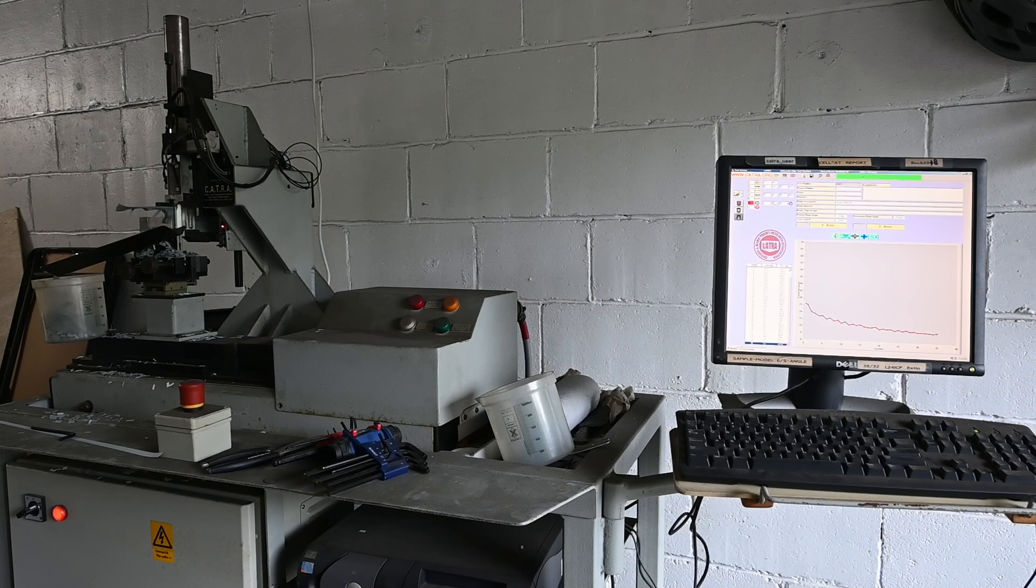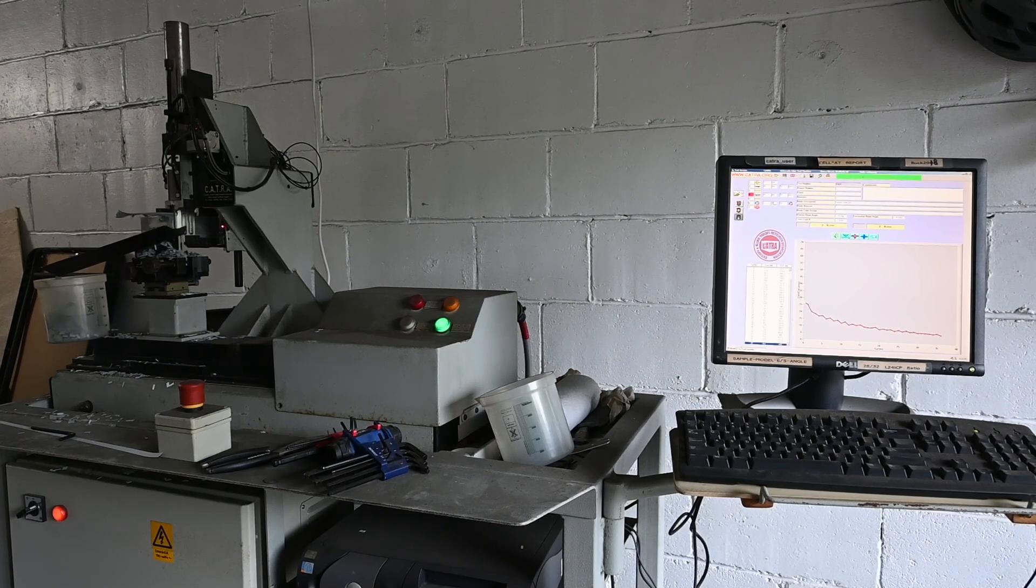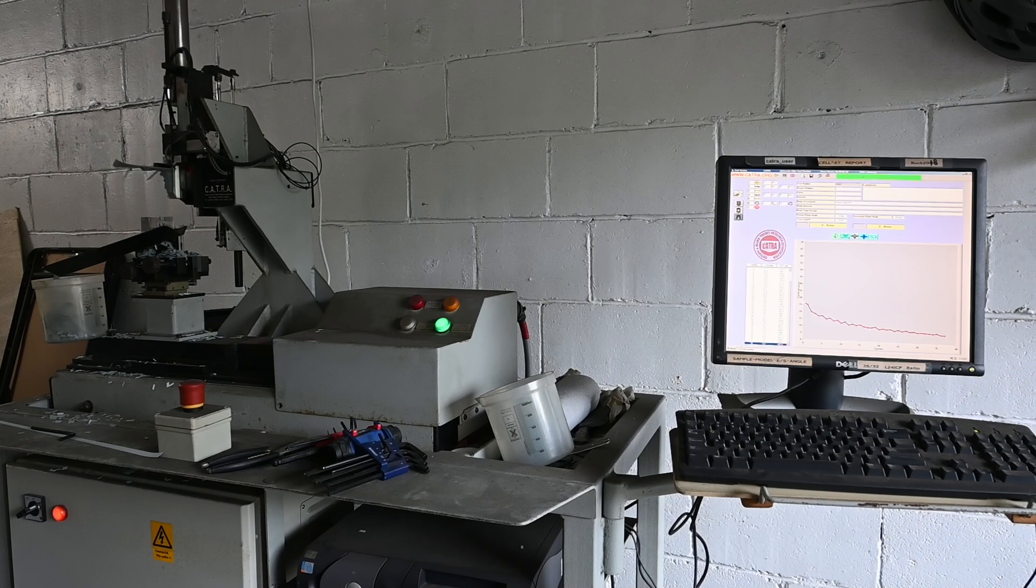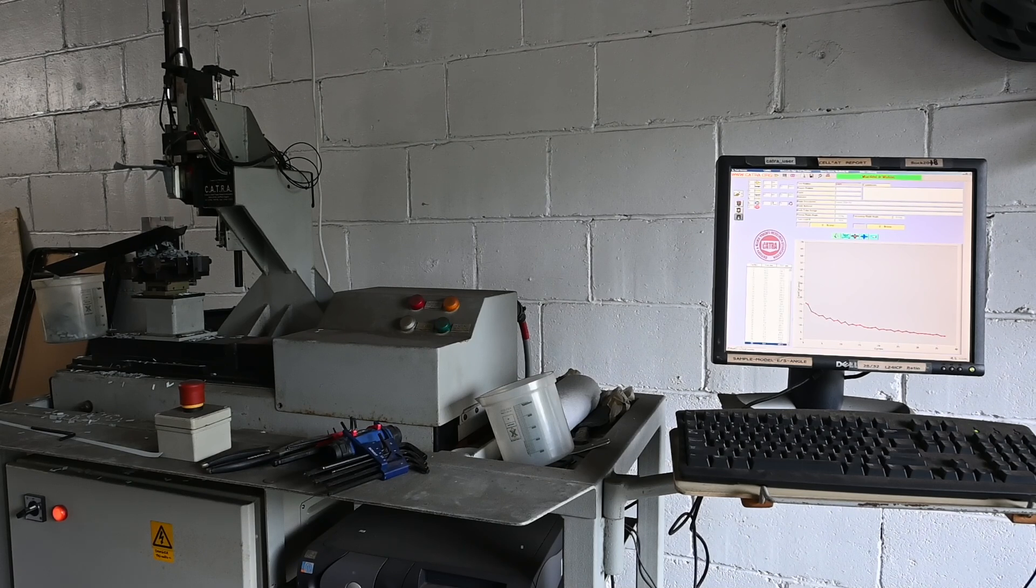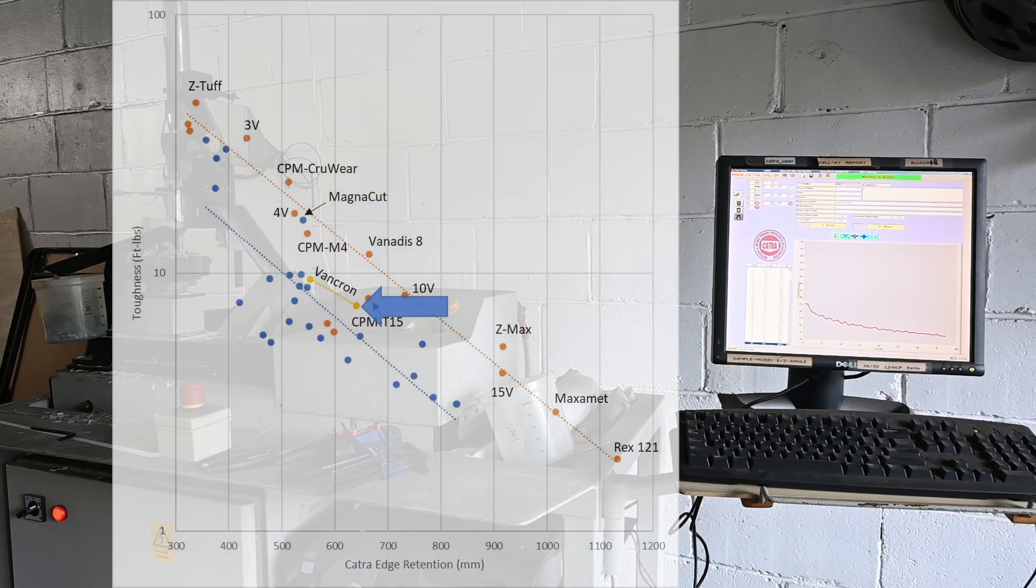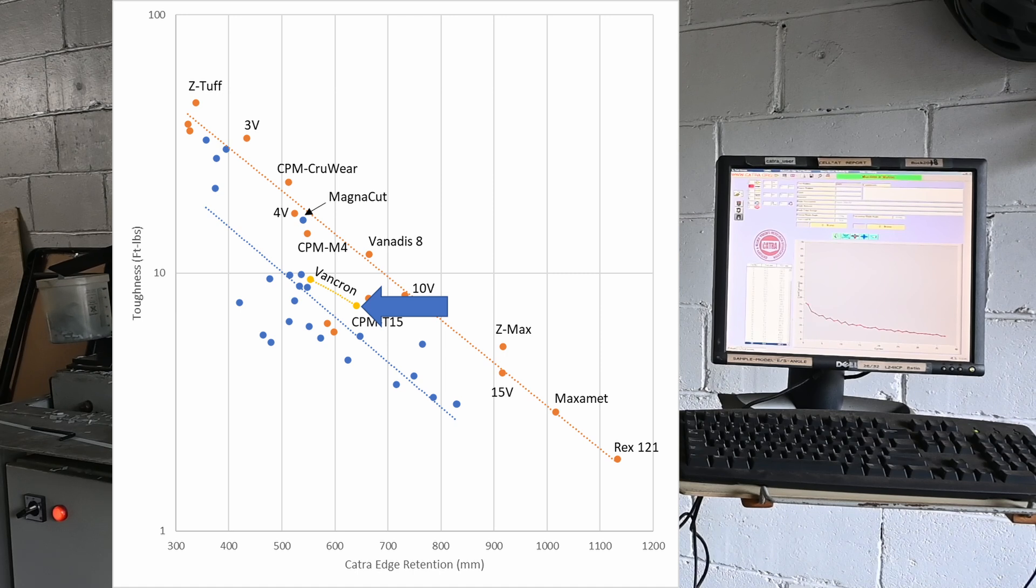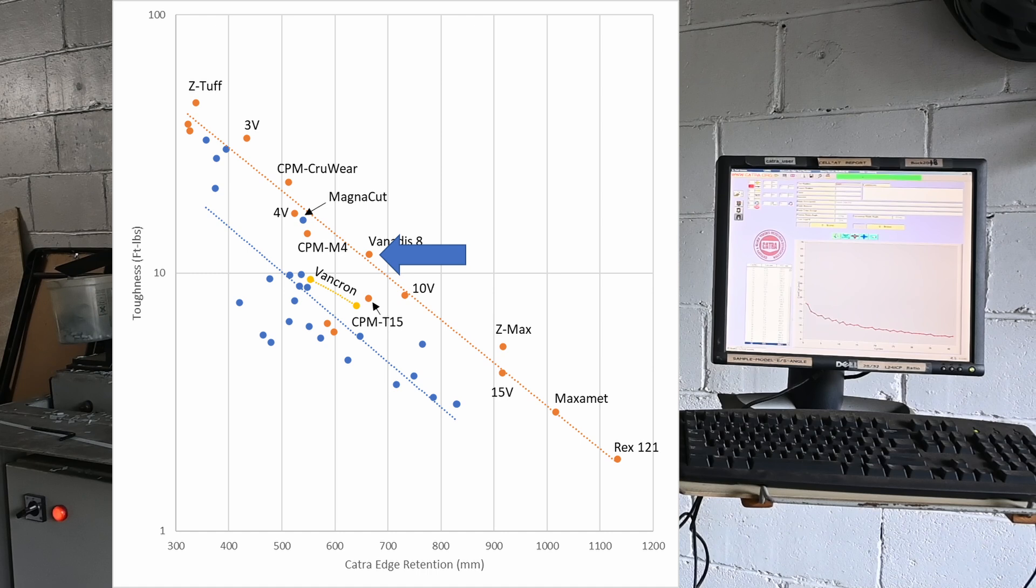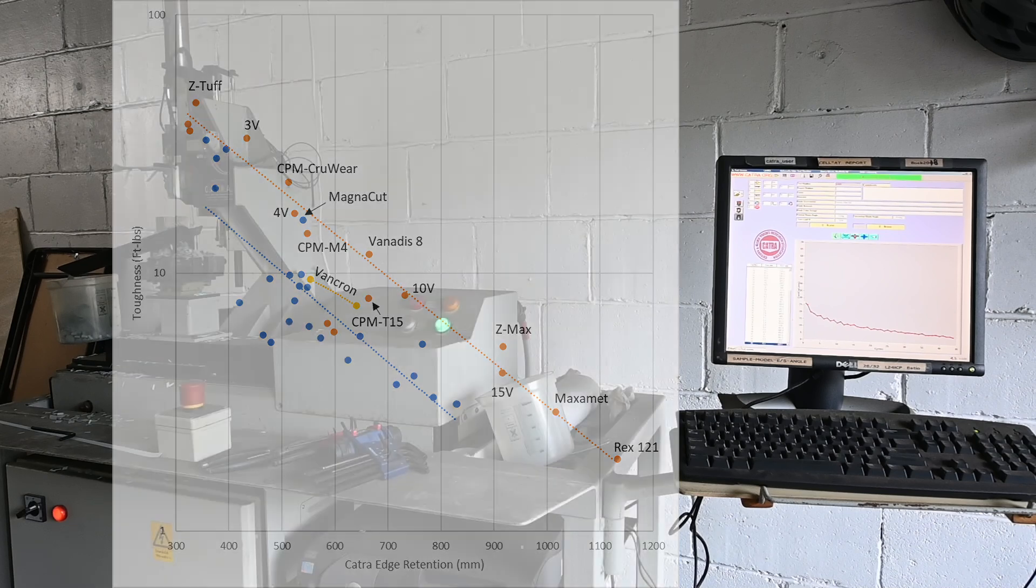So after all of that, is VANCRON a bad steel? No, I was just surprised about the results and the mechanisms at play for why it performed differently than expected. It is in a similar toughness-wear resistance balance to many high-speed steels and stainless steels. Personally, I would prefer to use a steel like CPM-10V or Vanax-8, as they have similar toughness to VANCRON, but with significantly more edge-wear resistance. But VANCRON is easier to grind and finish than those steels due to the finer, softer carbonitrides.